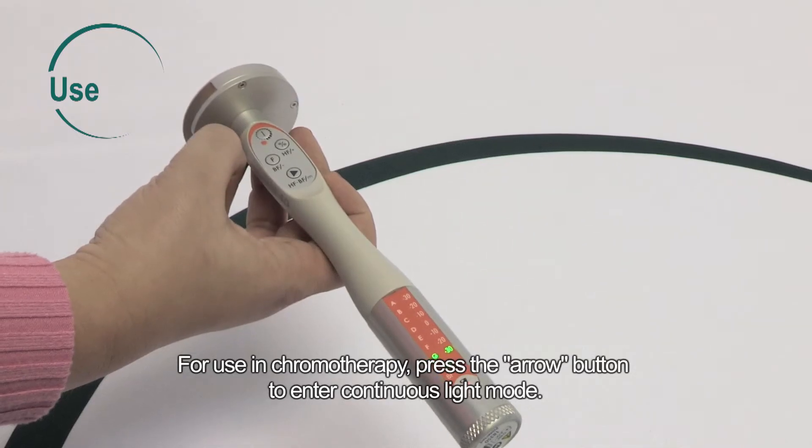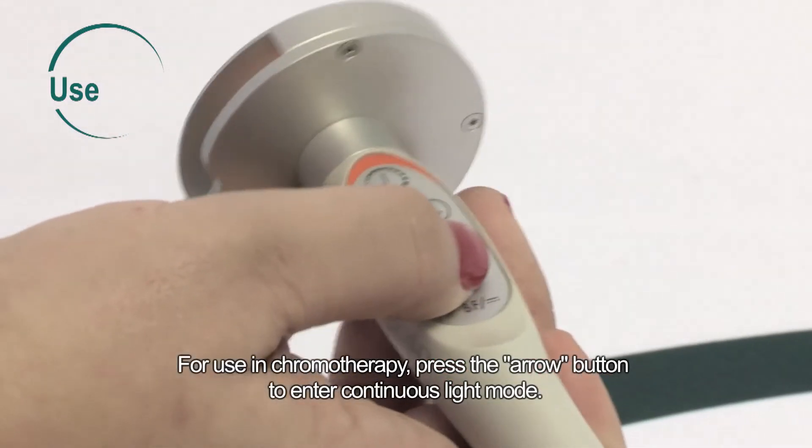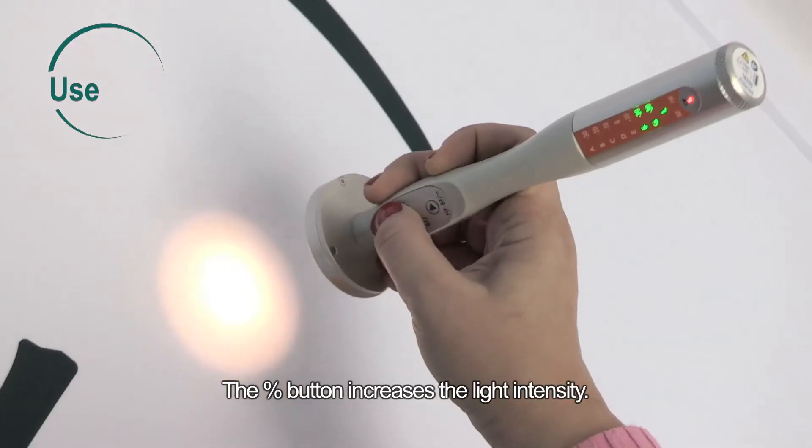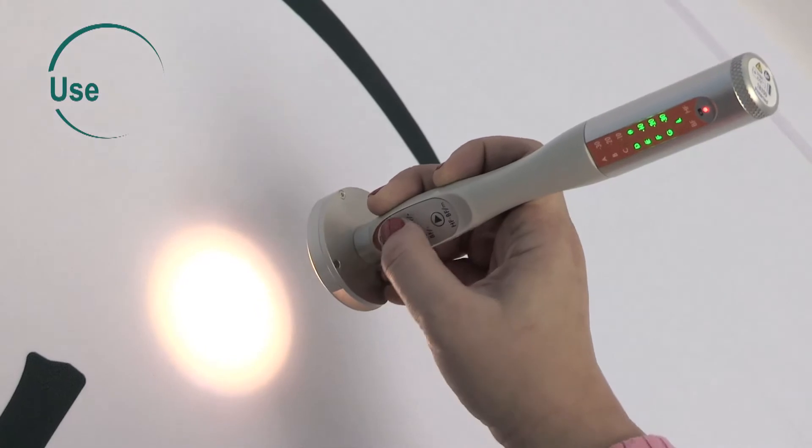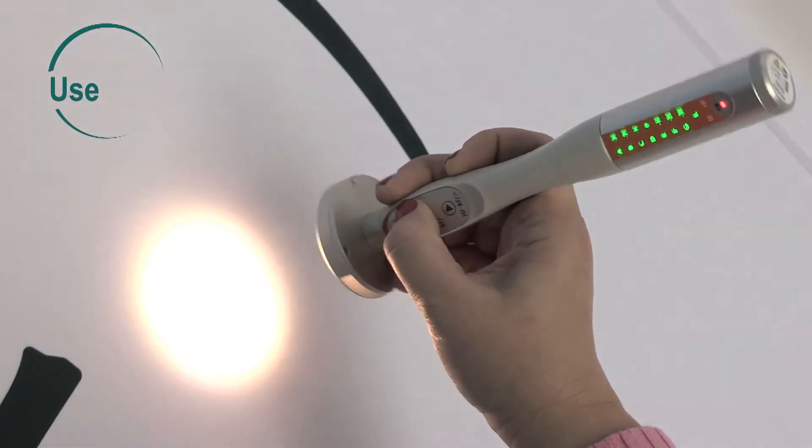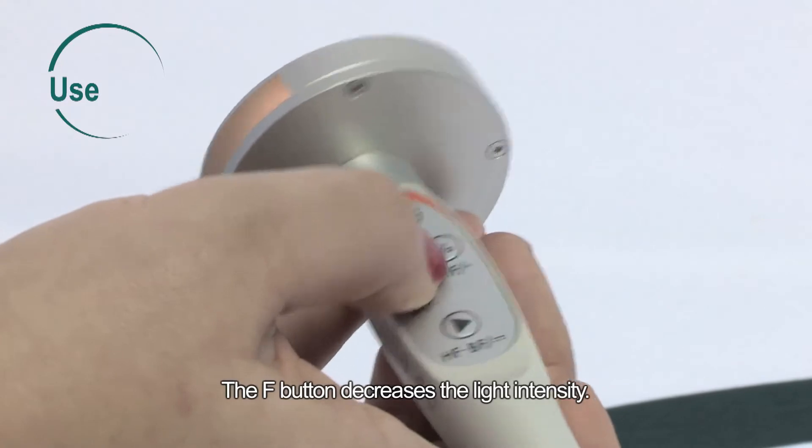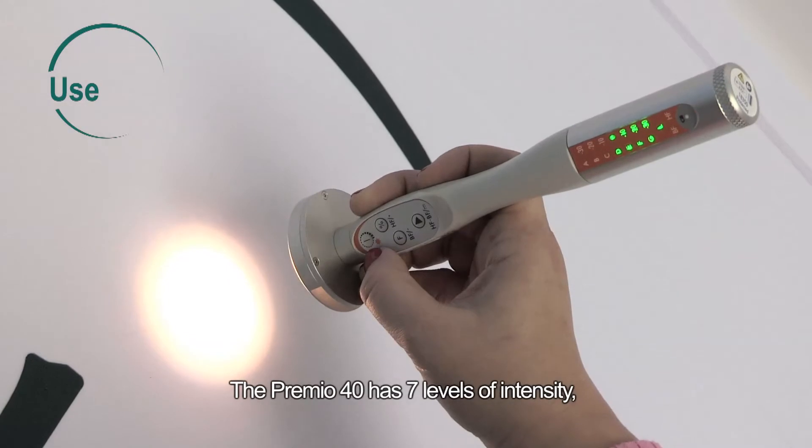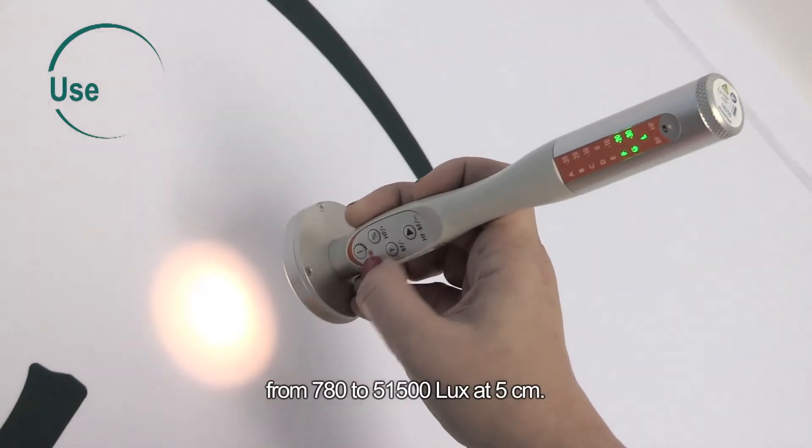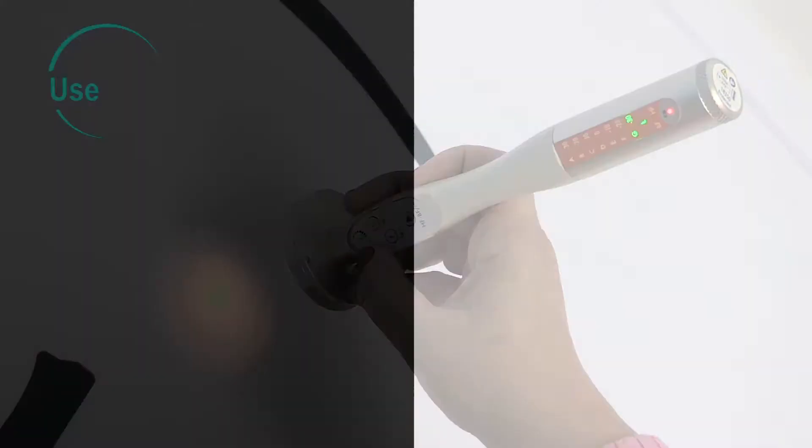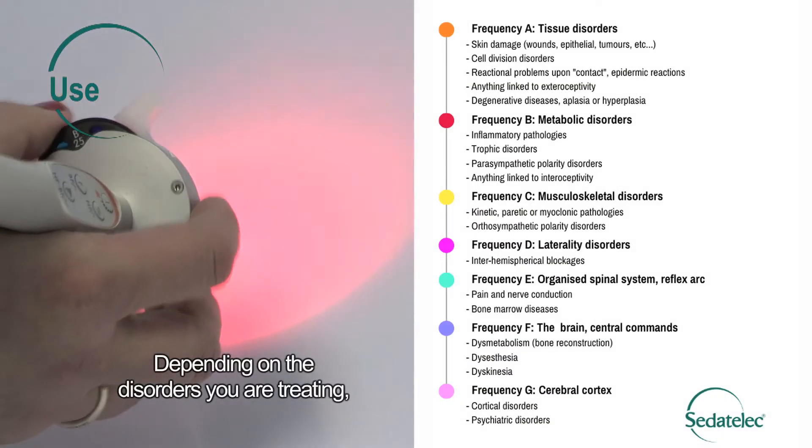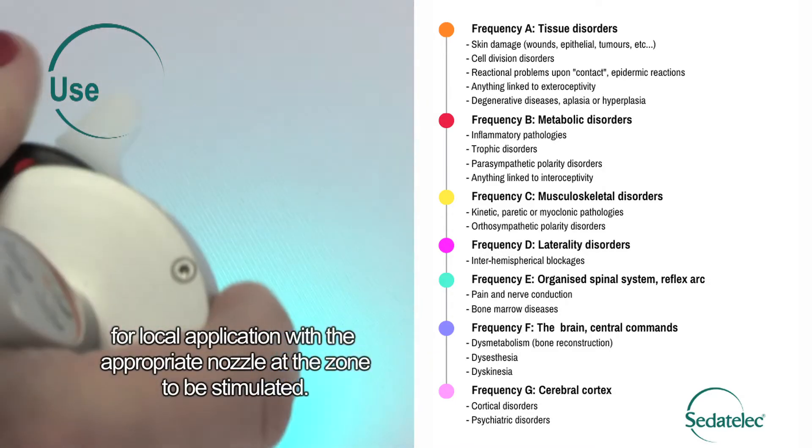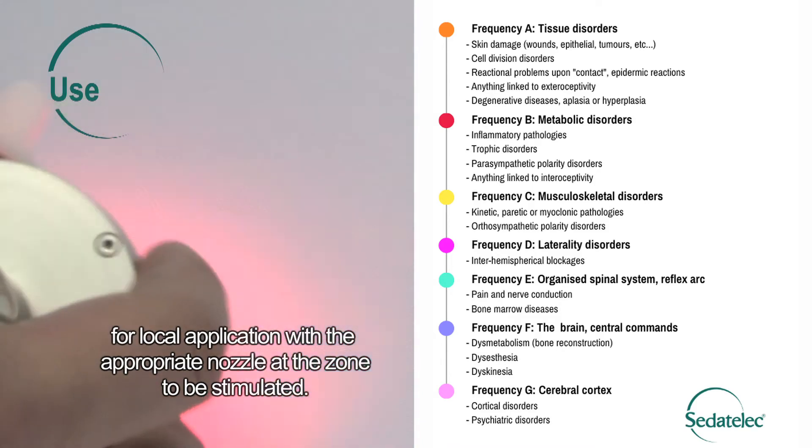For use in chromotherapy, press the arrow button to enter continuous light mode. The percent button increases the light intensity, and the F button decreases the light intensity. The Premio 40 has seven levels of intensity, from 780 to 51,500 lux at 5 cm. Depending on the disorders you are treating, you can use one or more colors from the Paul Nogia Color Frequency Program for local application with appropriate nozzle at the zone to be stimulated.